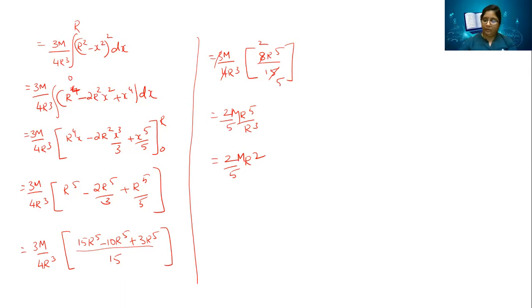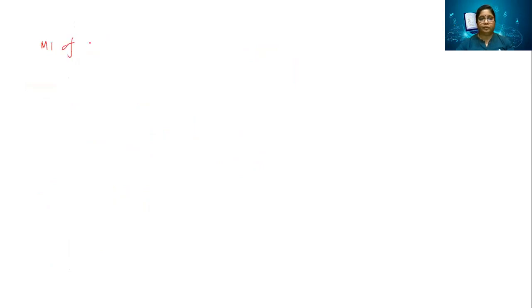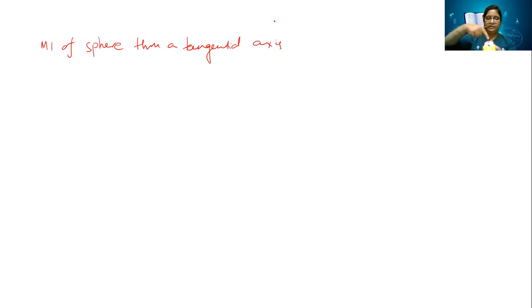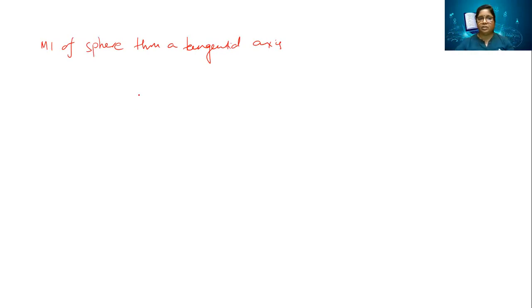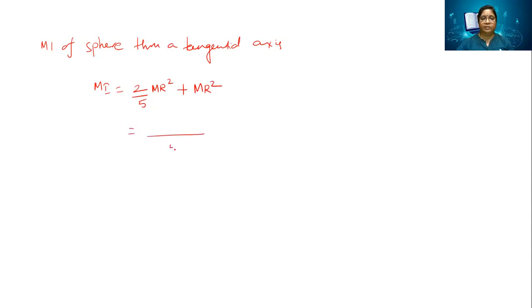We have one more modification — the moment of inertia of the sphere through a tangential axis. A tangential axis is parallel to the original central axis but touches the surface. We apply the parallel axis theorem: I_tangential = I_center + mr² = (2/5)mr² + mr² = (2mr² + 5mr²)/5 = (7/5)mr². So the moment of inertia of a sphere through a tangential axis is (7/5)mr².